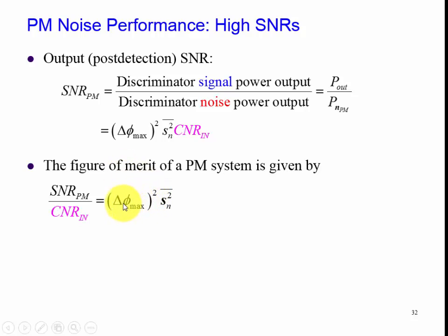And basically what it says is in order to improve my figure of merit governed by this ratio of ratios of signal to noise ratio of the phase modulated signal and the carrier to noise ratio of the input, we need to have a wide phase deviation.